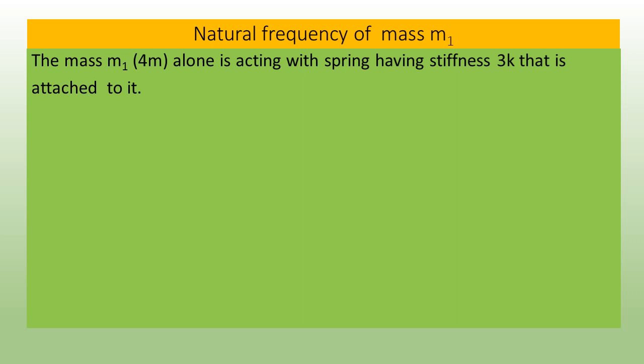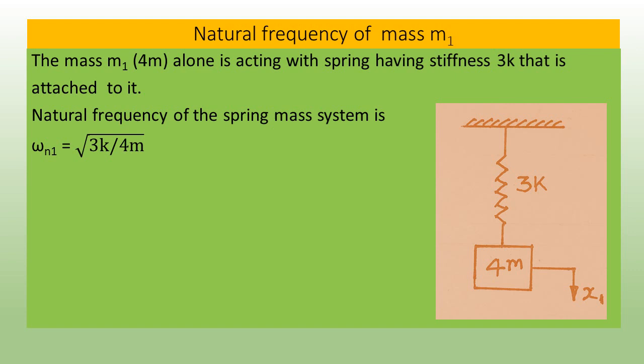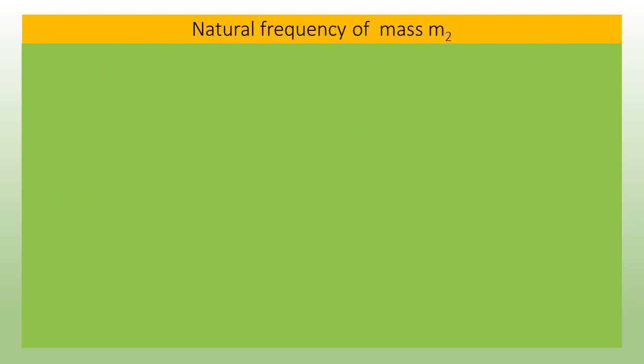For mass m1 alone acting with spring stiffness 3k: the natural frequency is ωn1 = √(3k/4m), which simplifies to ωn1 = 0.866√(k/m), giving ωn1² = 0.75 k/m.